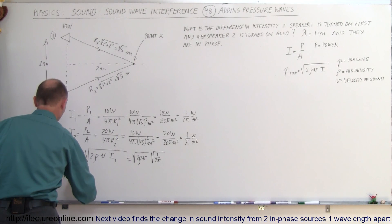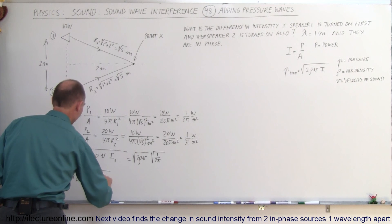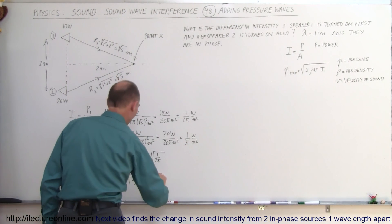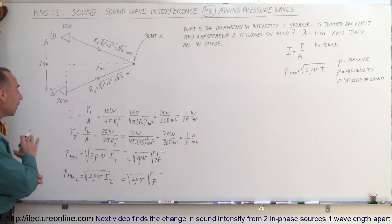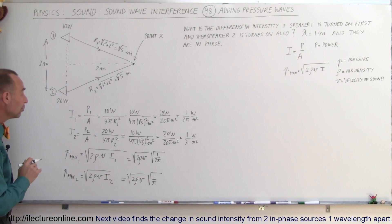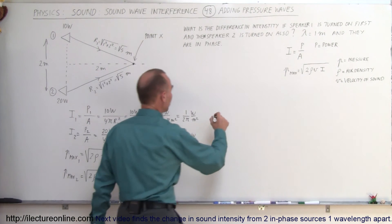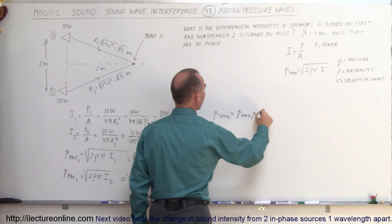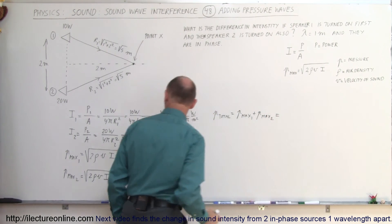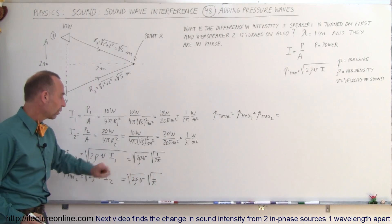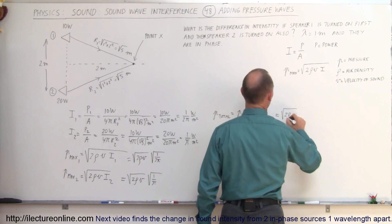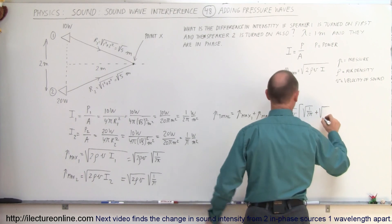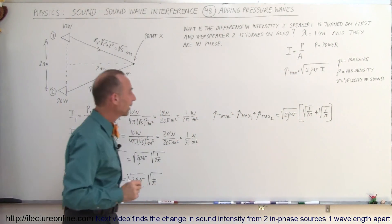The maximum pressure for the second speaker equals the square root of 2 times density times velocity times I₂, so that's the square root of 2ρV times the square root of 1 over π. Now we don't need numerical values for density or velocity because they will cancel out. The total pressure P_total equals P_max from source 1 plus P_max from source 2. Factoring out the common term, that's the square root of 2ρV times the quantity: the square root of 1 over 2π plus the square root of 1 over π.